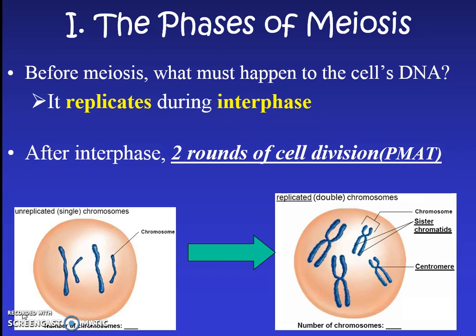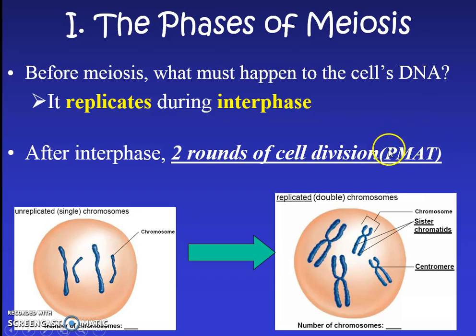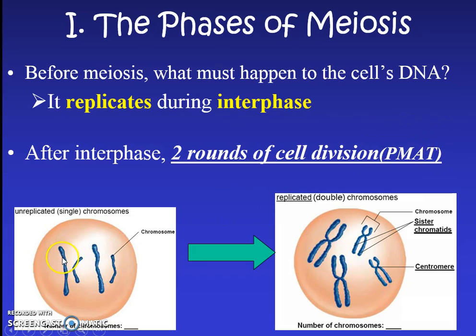Specifically, one of the biggest differences is it's going to have two rounds, two rounds of cell division. We know cell division is going from prophase, metaphase, anaphase, and telophase - two whole cycles of PMAT and then PMAT again. So we'll have interphase going from having one butterfly wing to having two butterfly wings, and then it'll go through two rounds of PMAT.